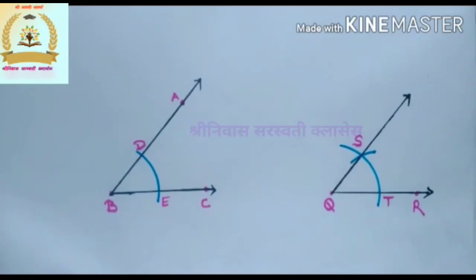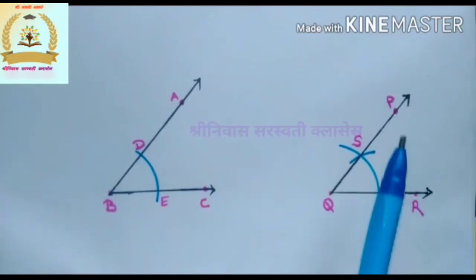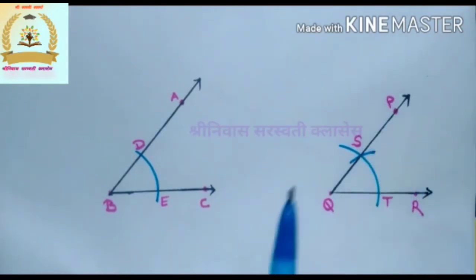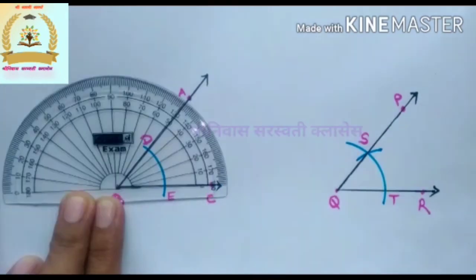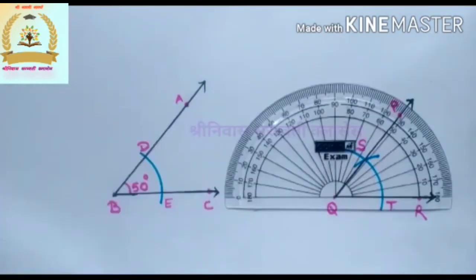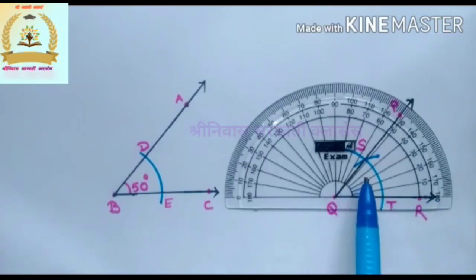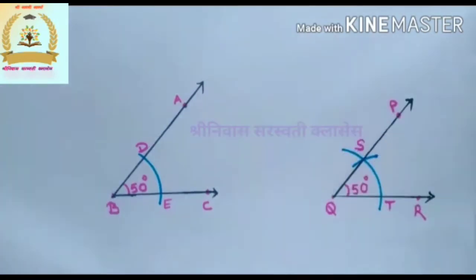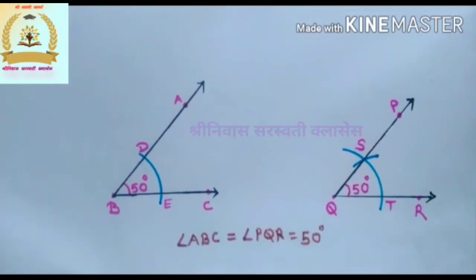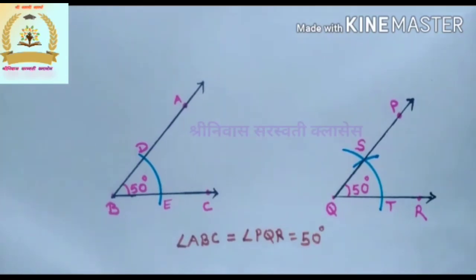Draw the ray QS and take any point P on the ray QS. The measure of angle ABC is 50 degrees. Using the protractor, verify that angle PQR so formed is of the same measure as angle ABC. Yes, it is 50 degrees. Therefore, angle ABC equals angle PQR equals 50 degrees.